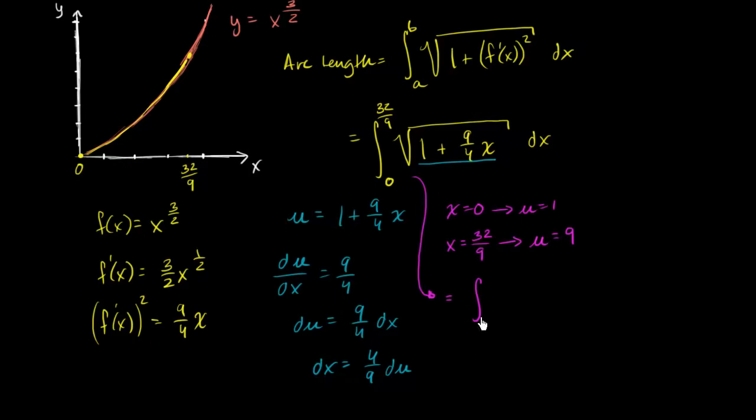The definite integral from u equals one to u equals nine. I'm going to make it very explicit that I'm dealing with u now. Of the square root of u, instead of dx, we have dx is four ninths du. Let me do it this way. Square root of u, instead of dx, we have times four ninths du. And I'm just going to take the four ninths and stick it out here. Four ninths du.